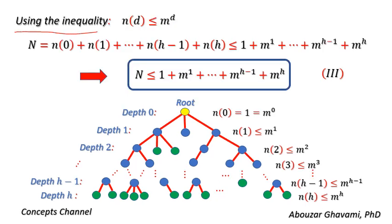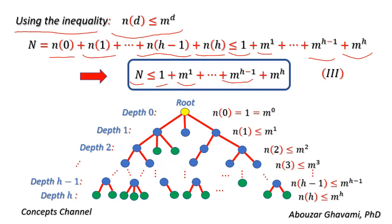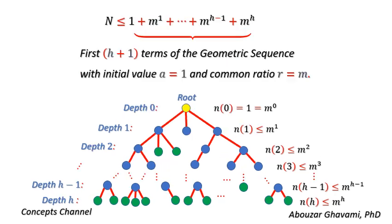Using the inequality n(d) ≤ m^d, we have: n(0) ≤ m^0 = 1; n(1) through n(h−1) ≤ m^1 through m^(h−1); and n(h) ≤ m^h. Thus n ≤ 1 + m^1 + ... + m^(h−1) + m^h. Note that the summation 1 + m + ... + m^(h−1) + m^h is the first h+1 terms of a geometric sequence with initial value a = 1 and common ratio r = m.